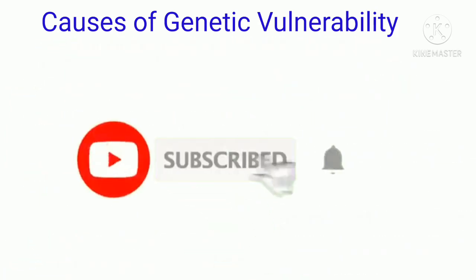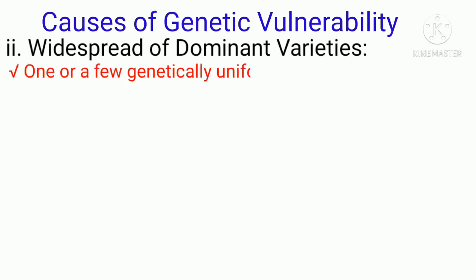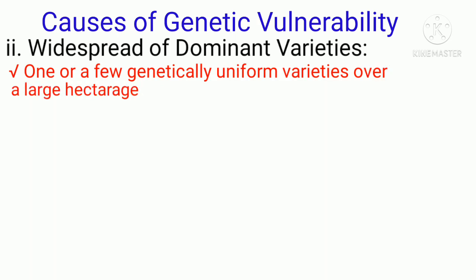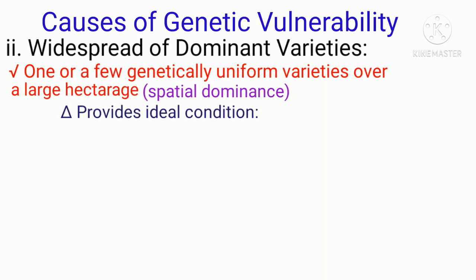The other cause of vulnerability is the wide spread of dominant varieties. One or a few genetically uniform varieties grown over large hectares — called spatial dominance — is considered a prerequisite for the wide spread of diseases and insect pests, as it provides ideal conditions and creates vulnerability. The wide spread of dominant varieties provides ideal conditions for insect pests and diseases, making crop populations vulnerable.